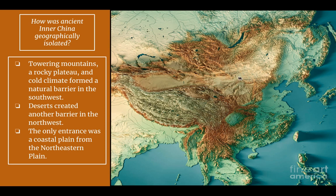You can see all this flat brown desert. Where you see the green is the North China plain — you can see how it's blocked by all these geographical features from the rest of Asia. The only entrance was a coastal plain from the northeastern plain. So the only way into the North China plain is that corridor — everything else is blocked off by some form of physical features.